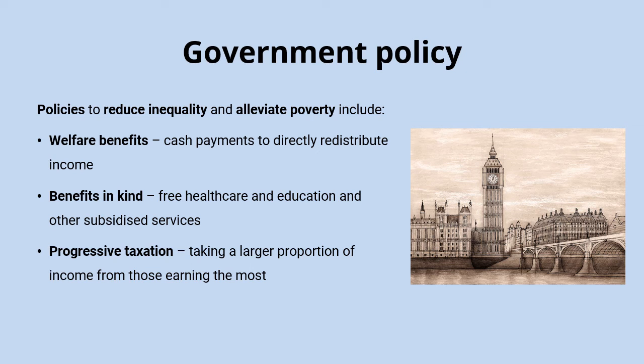We also have a progressive tax system in the UK — certainly for income tax. This means we take a larger proportion of income from those who earn the most. People who earn more not only pay more in absolute terms but also a bigger proportion of their income in tax. This happens through increasing bands: a personal allowance with no income tax, then 20% at the basic rate, 40% at the higher rate, and 45% on very large incomes.